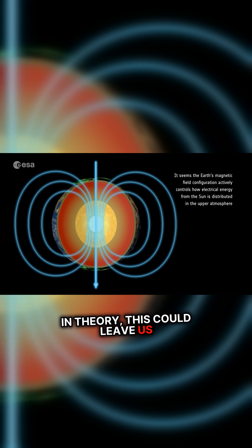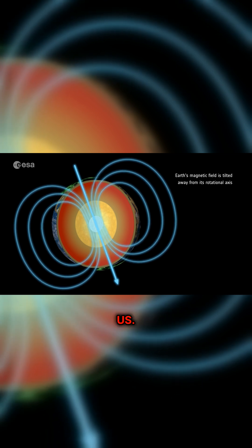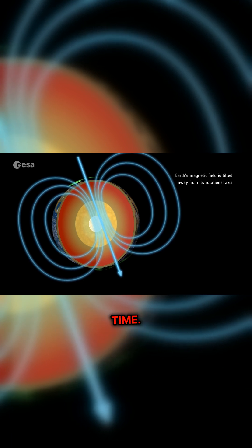In theory, this could leave us much more vulnerable to all the solar radiation space throws at us. We could see auroras reaching much further south during that time.